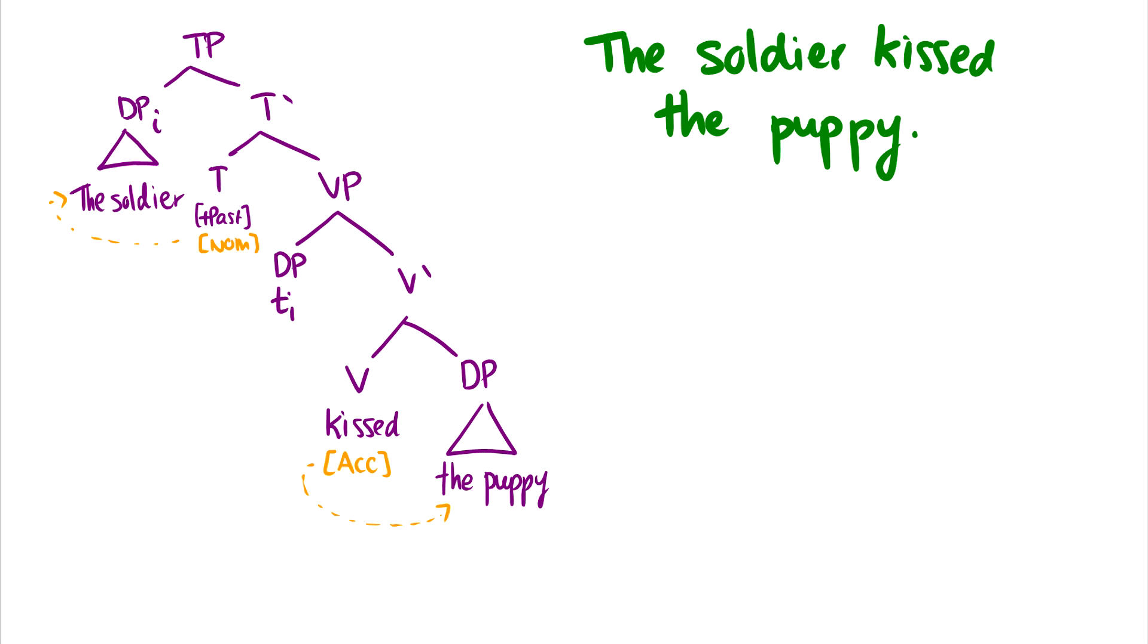Let's take a look at an example. The soldier kissed the puppy. So this is the active version of the sentence. I'm just going to point this out quickly. First of all, the soldier is the agent of kissed. So it moves up to spec TP. It gets nominative case. And of course, the puppy is the theme of kissed and gets accusative case from kissed. This is a pretty straightforward tree. These are like the ones we've seen so far.